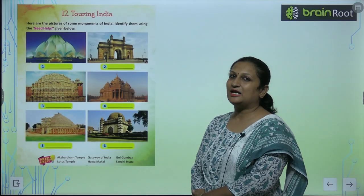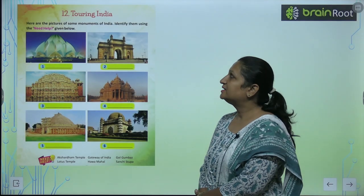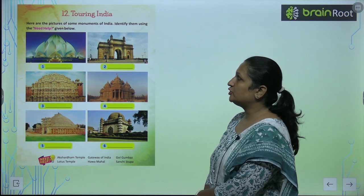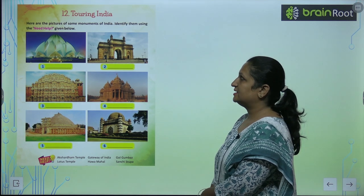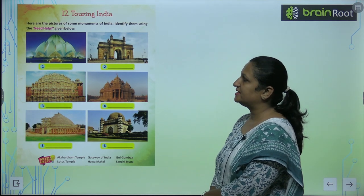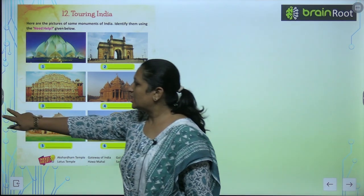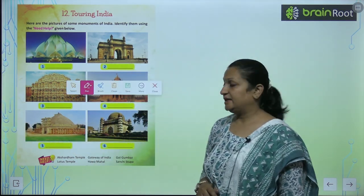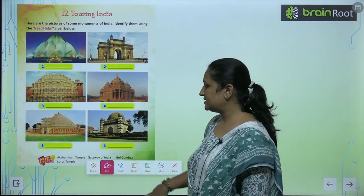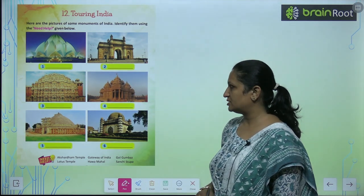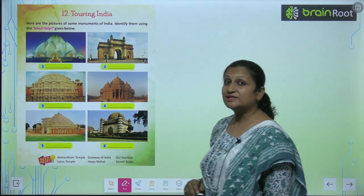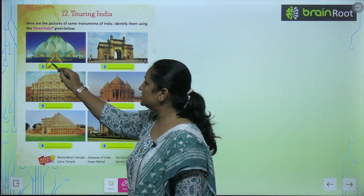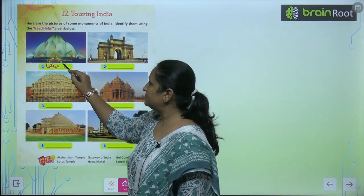Children, let's start with chapter number 12, that is Touring India. Here are the pictures of the monuments of India. Identify them using the help given below. See the first picture — this is the Lotus Temple. So you can write Lotus Temple.